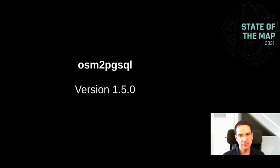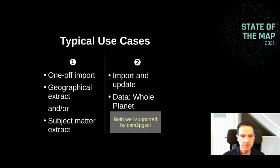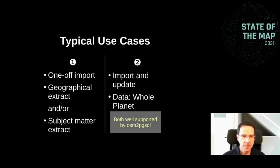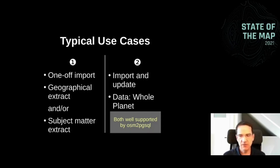I'm talking here about version 1.5, which was released in June of this year. Typical use cases for the program are either the one-off import, where you want to import maybe the data for your city or country, or maybe just the shops in your area. You import the data once, do something with it, do some kind of analysis, create an ad hoc map or something, and then the project is finished and you're done. That's one typical use case.